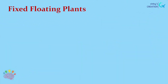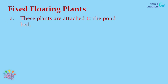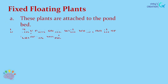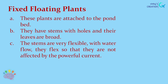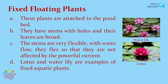Another type of floating plants are fixed floating plants. These plants are attached to the pond bed. They have stems with holes and their leaves are broad. The stems are very flexible — with water flow, they flex so that they are not affected by the powerful current.